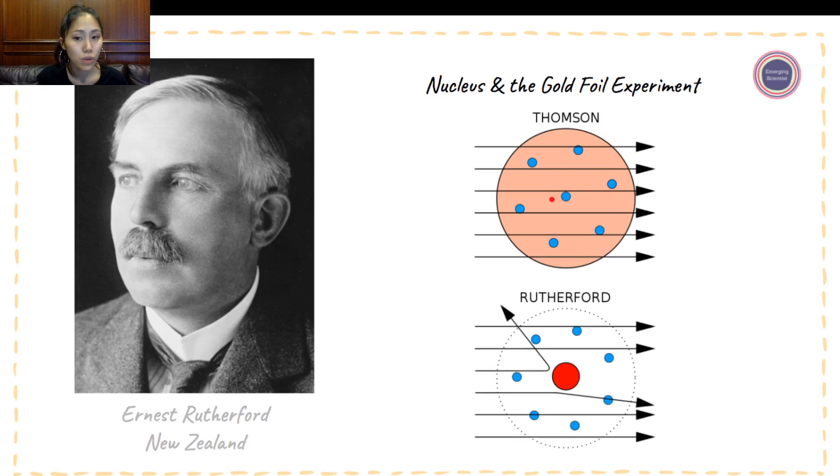Ernest Rutherford, however, through his gold foil experiment, was able to find that oddly, when he ran his experiment, there was some form of deflection of alpha particles. And he was thinking, okay, so clearly not everything is negative inside the atom. And so this is where the positively charged center came from.